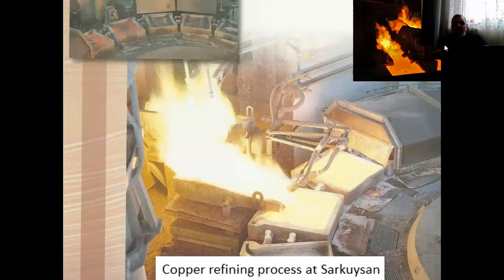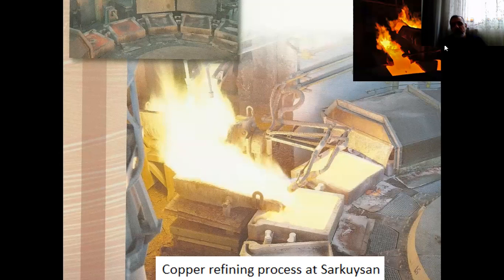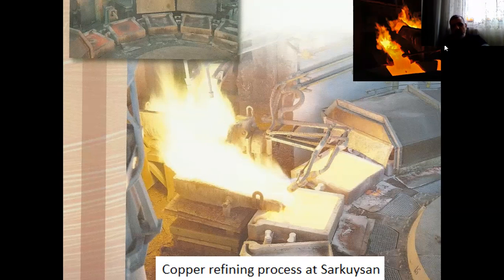Here are some examples. This copper refining process is at Sarkuysan — one of the most leading copper companies in Gebze. They produce refined copper. With the help of electrolysis, they get cathodic copper, and therefore 4-9 copper can be produced. I'm going to explain how it can be carried out.